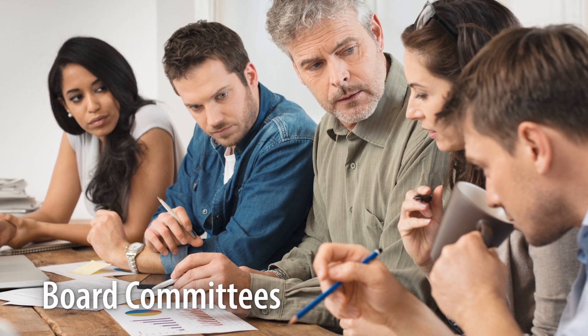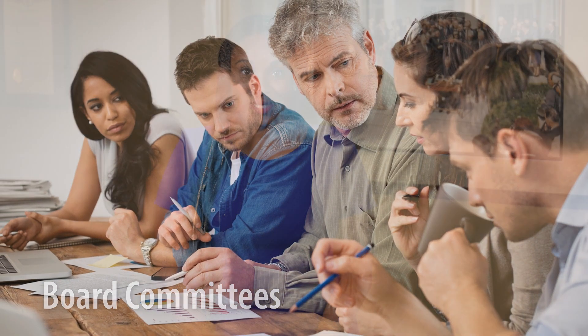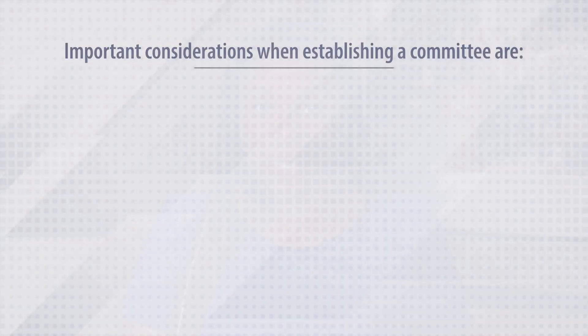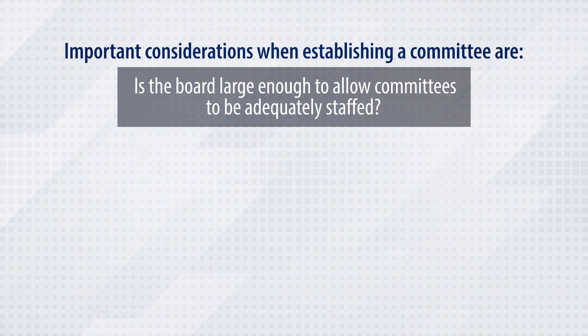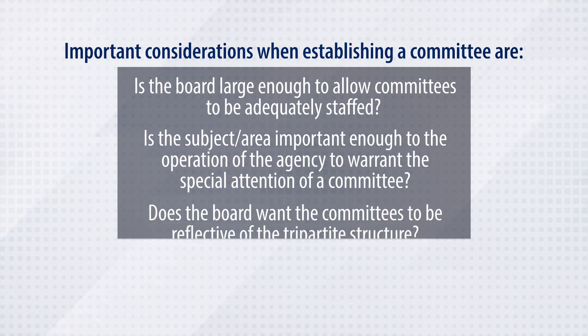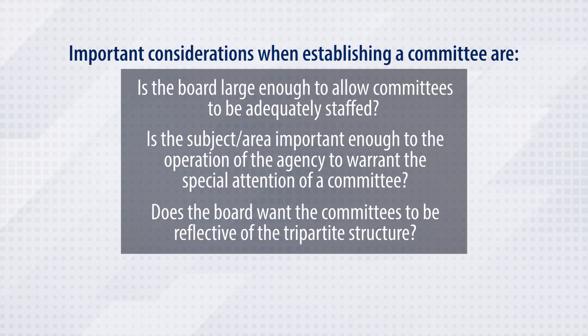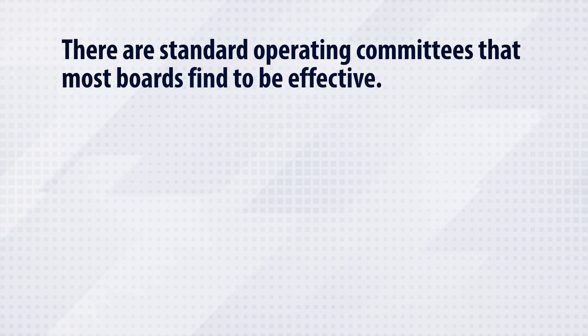Just as every community action board is unique in composition and approach, each board must determine the number and type of committees needed to tend to its business. Many organizations have the same committee structure from year to year, with little consideration as to what the committees do or whether they are still relevant to the agency. Some boards opt for a zero committee structure, which places the onus of substantial work across the entire board membership. Important considerations when establishing a committee are: is the board large enough to allow committees to be adequately staffed? Is the subject important enough to warrant the special attention of a committee? Does the board want committees to reflect the tripartite structure? Is there a maximum or minimum size set for each committee?